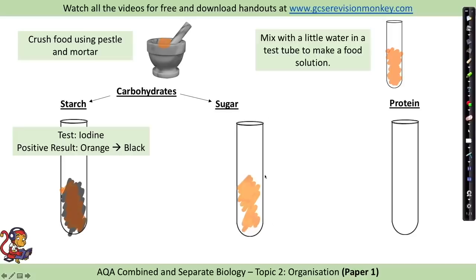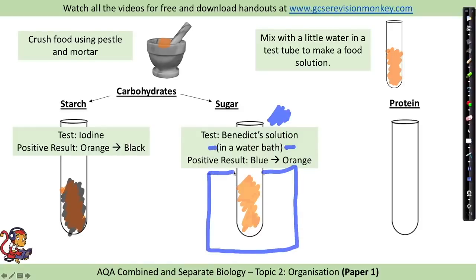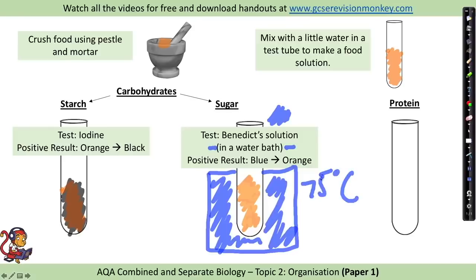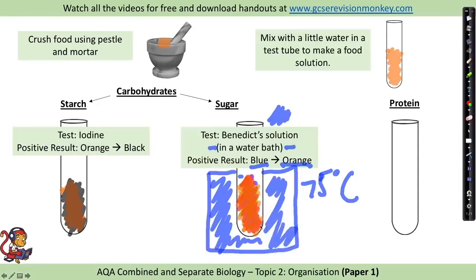To test for sugar, add Benedict's solution to your food solution in a test tube. Benedict's solution is blue, but importantly you also need to place the test tube in a water bath at around 75°C. A positive result is a colour change from blue to orange. In your revision guide you may also see green (a little sugar) or brick red (a lot of sugar), but if in doubt, remember blue to orange.